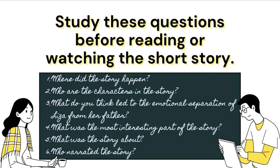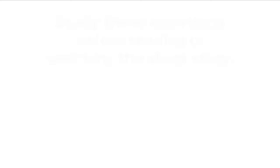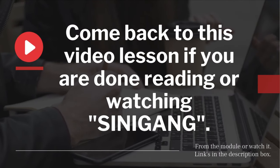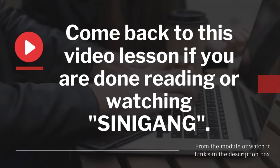Study these questions before reading or watching the short story. First question: where did the story happen? Two: who are the characters in the story? Three: what do you think led to the emotional separation of Lisa from her father? Four: what was the most interesting part of the story? Five: what was the story about? Six: who narrated the story? Because these questions will lead us in identifying the elements of a short story. Come back to this video lesson if you are done reading or watching Sinigang. I'll be waiting for you!